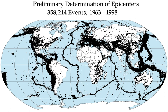Some earthquake ruptures travel at unusually low velocities and are referred to as slow earthquakes. A particularly dangerous form of slow earthquake is the tsunami earthquake, observed where the relatively low felt intensities, caused by the slow propagation speed of some great earthquakes, fail to alert the population of the neighboring coast, as in the 1896 Sanriku earthquake.